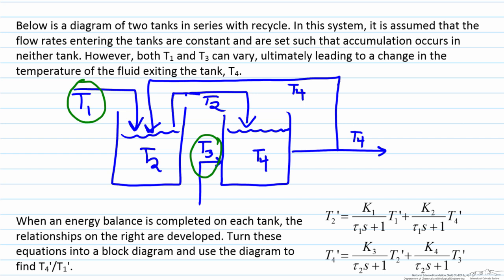In this problem we are assuming that the flow rates are constant and that there is no accumulation. We have this inlet temperature T1 which can vary, so therefore a variation in T1 can cause a variation in T2.